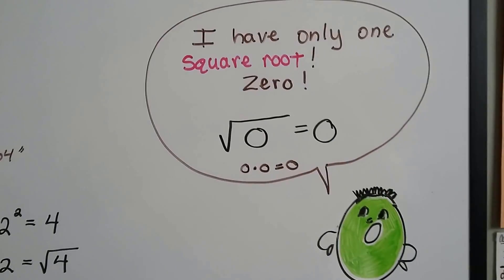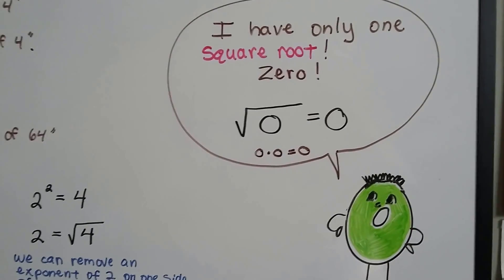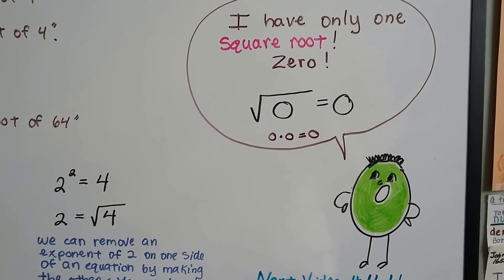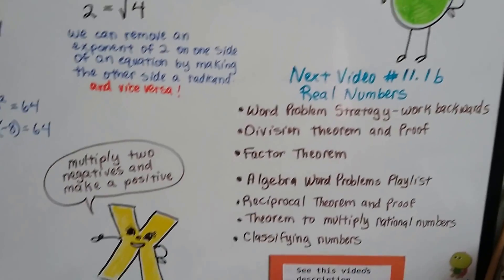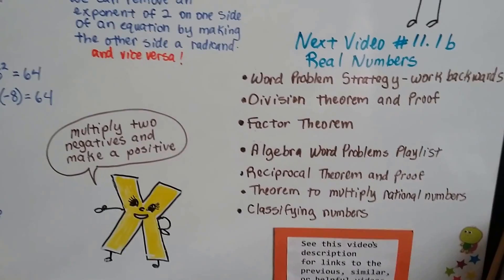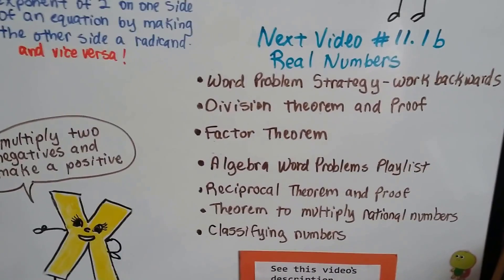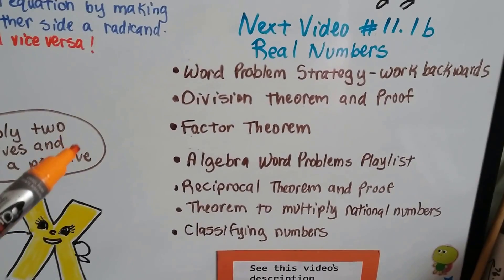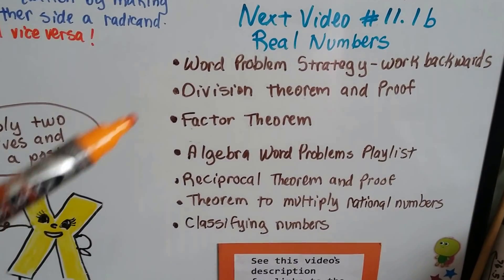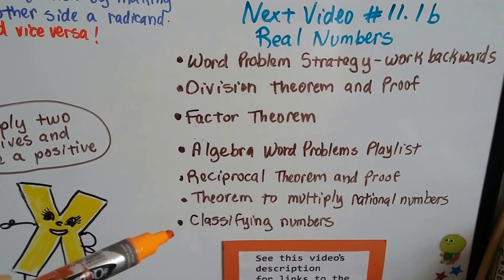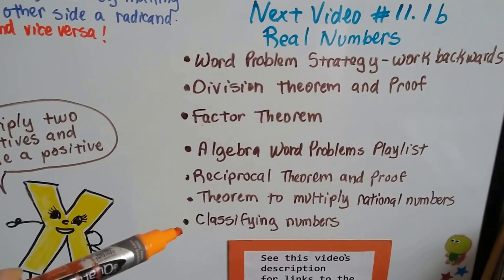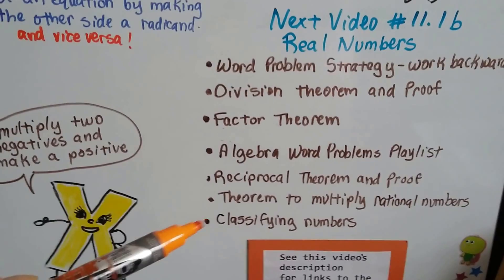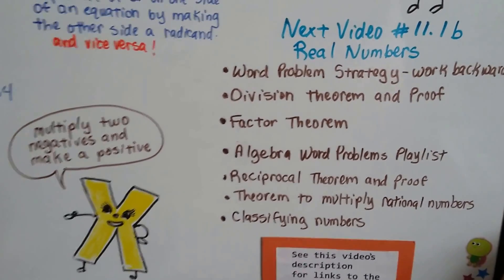Zero only has one square root: 0. The square root of 0 is 0, because 0 times 0 is 0. Just remember, we multiply two negatives and make a positive. Our next video, 11.1b, is going to talk about real numbers and irrational numbers. If you want to link to any of the previous videos from chapter 10, just click on the description of this video, and there'll be that classifying numbers video in there.